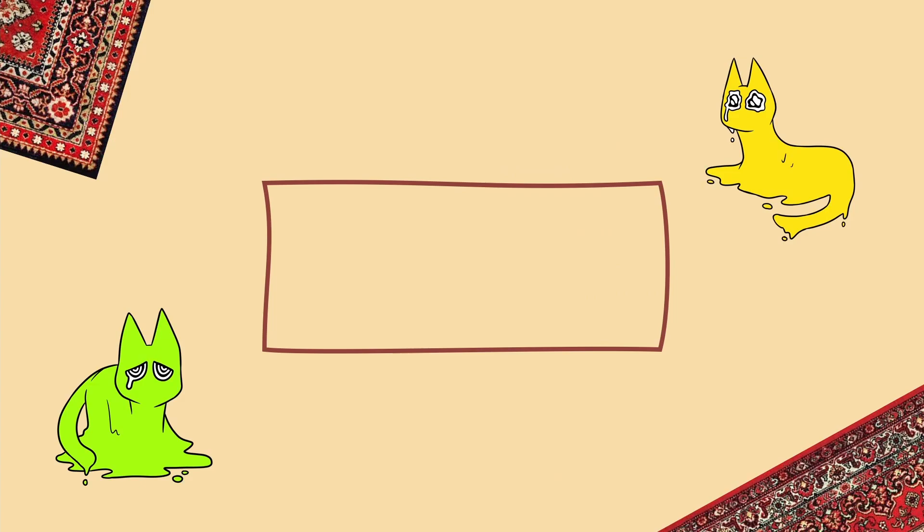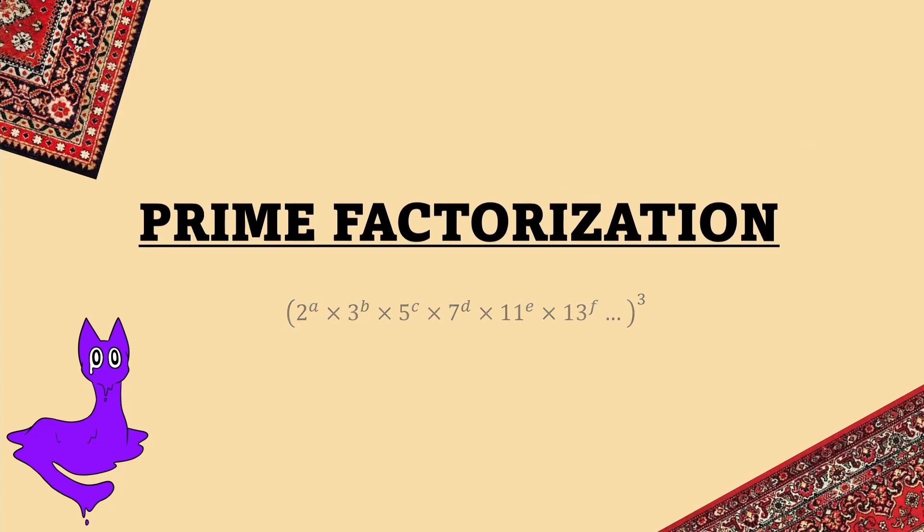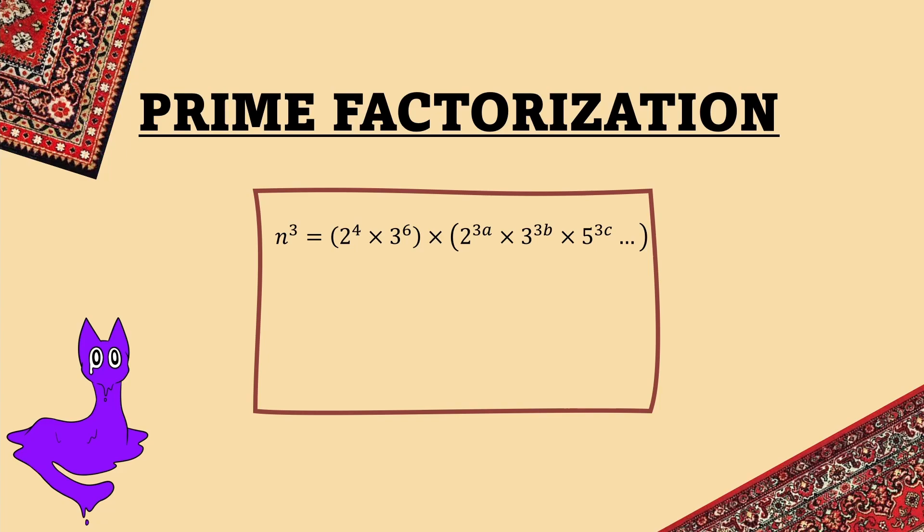But hey, you're an expert at this now, so you bring back the cubic version of the formula from earlier. Prime factorization time, it turns out all cubed numbers have their factors risen to multiples of 3. So, if you take a non-cubed number and multiply it by a cubed number, you're going to wind up with factors which are not risen to multiples of 3, meaning that the result cannot be a cubed number.